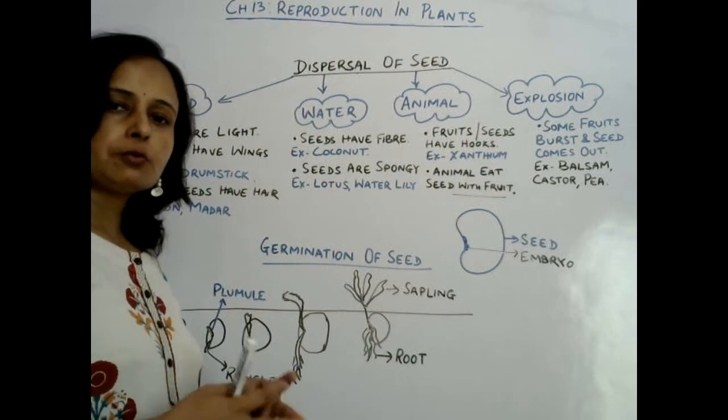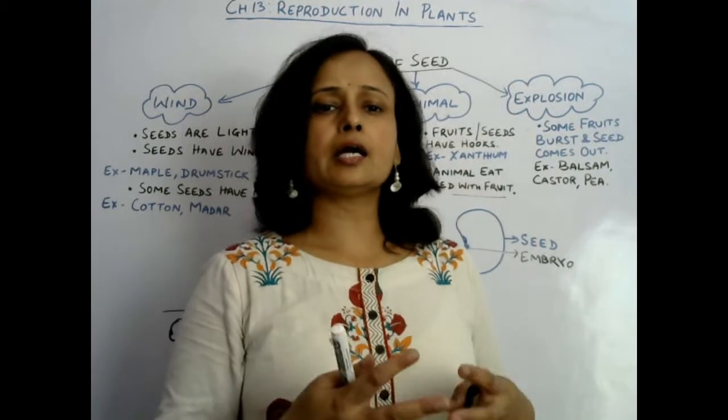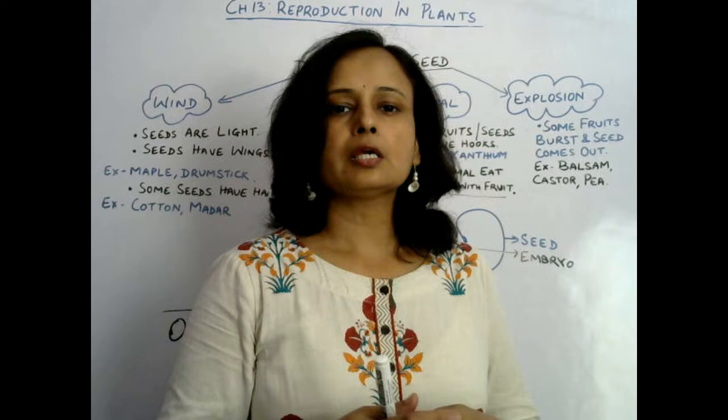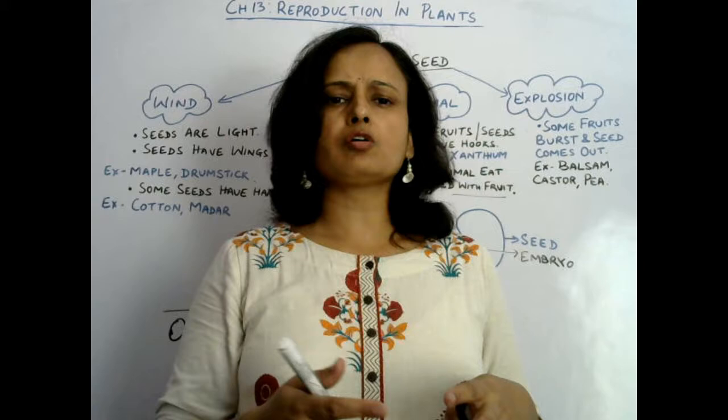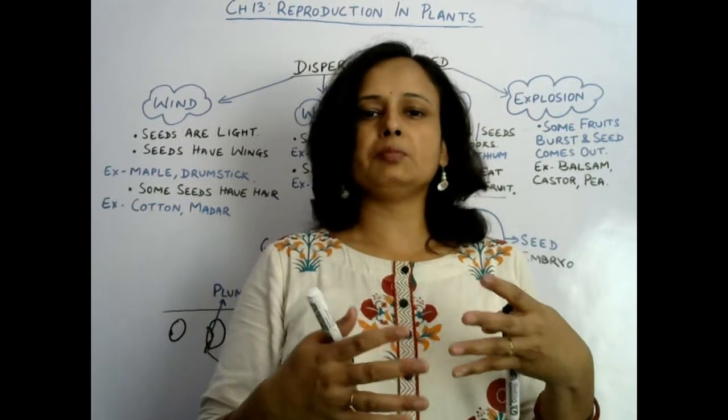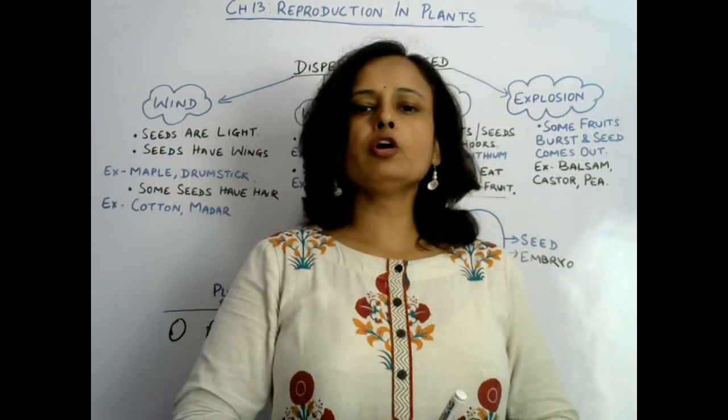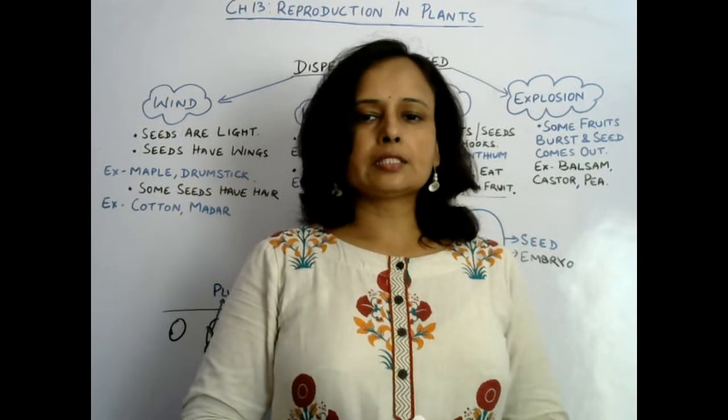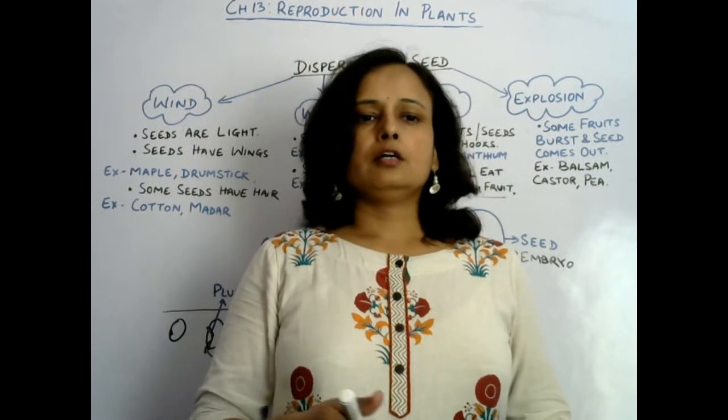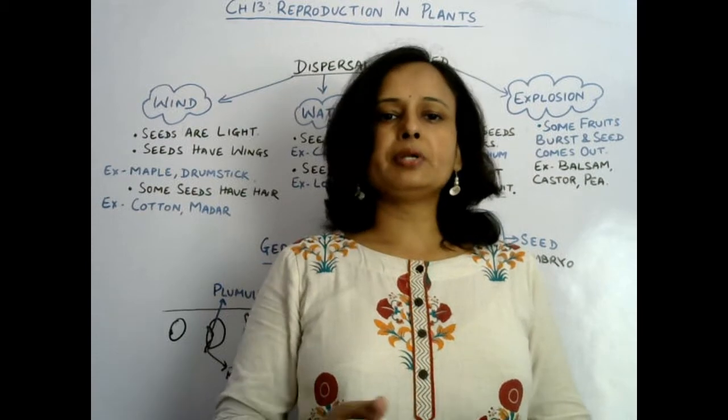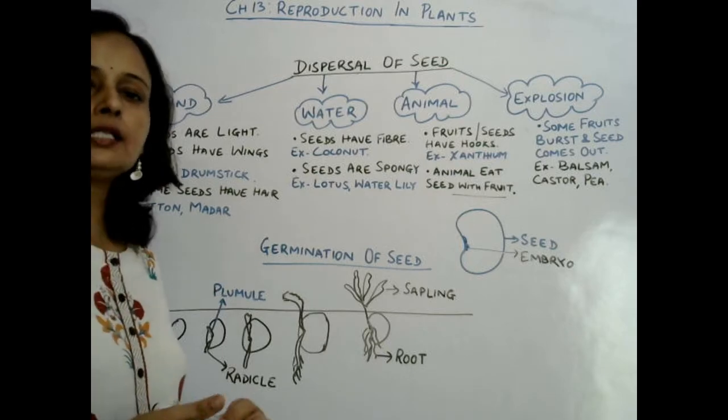Now next, through explosion. Explosion means bursting. Some seeds are light in weight and they can't bear high speed wind. After maturing, after drying off, they can burst due to wind or maybe some other factors. After bursting, the seeds come out and scatter over a certain area. Those seeds are balsam, castor, and pea. In this way, dispersal of seed takes place in different places so that seeds can grow into healthy saplings.